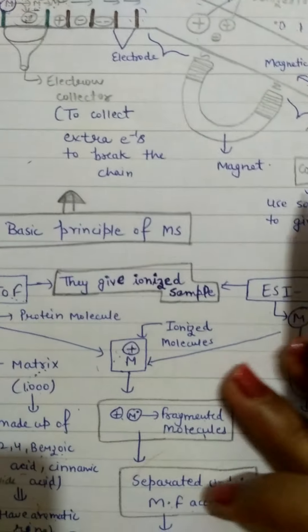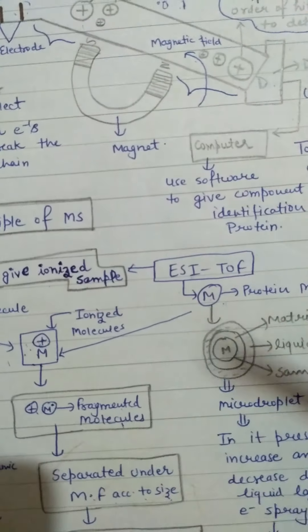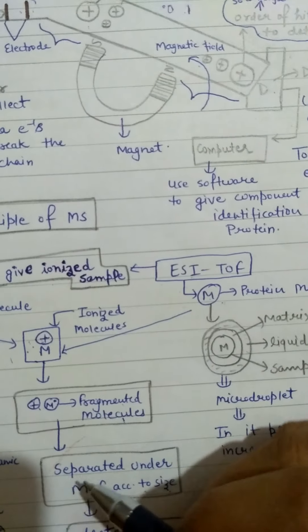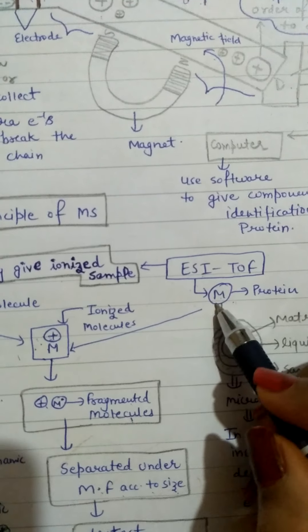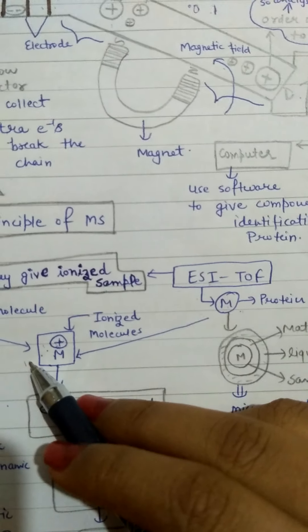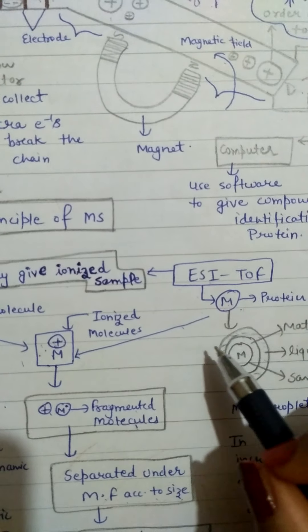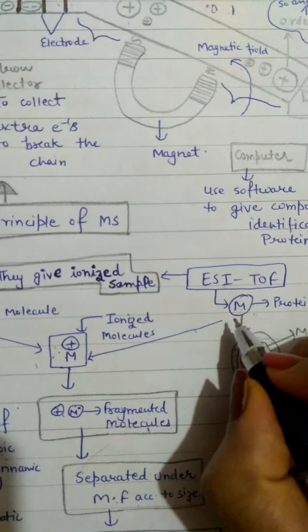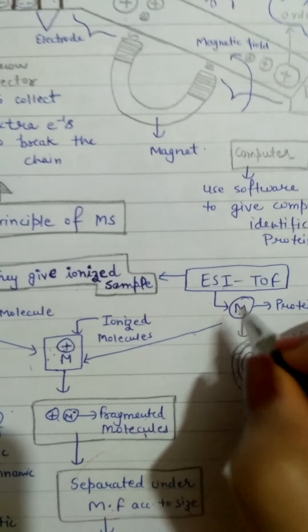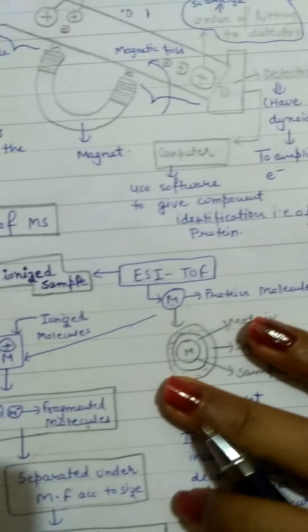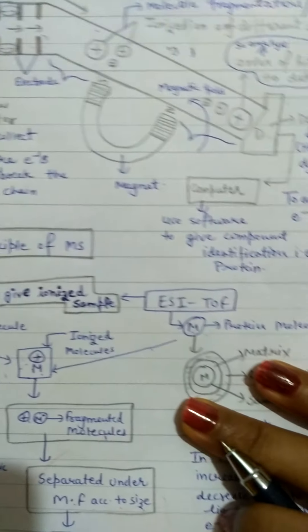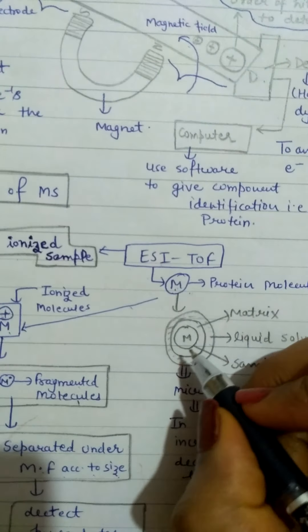Today we will talk about ESI — Electrospray Ionization. We will follow the same steps: when we ionize the molecule, we use electrospray ionization. Let's look at what happens at this stage.